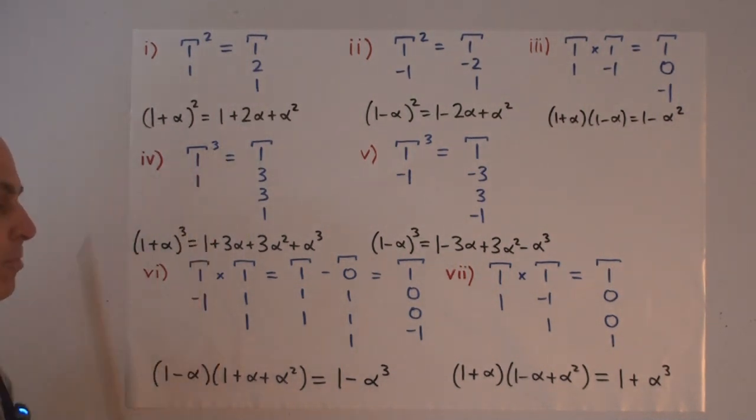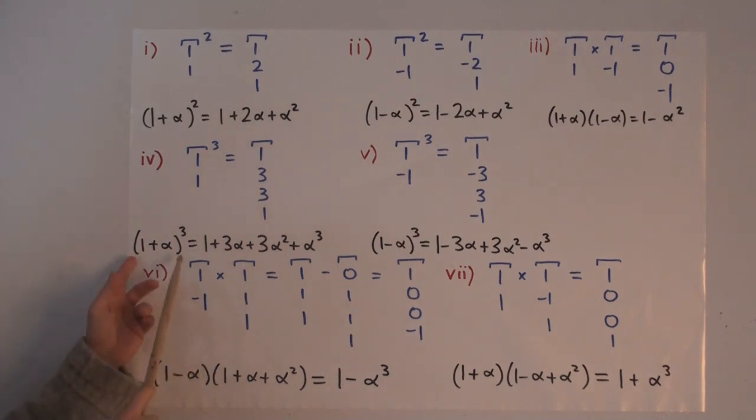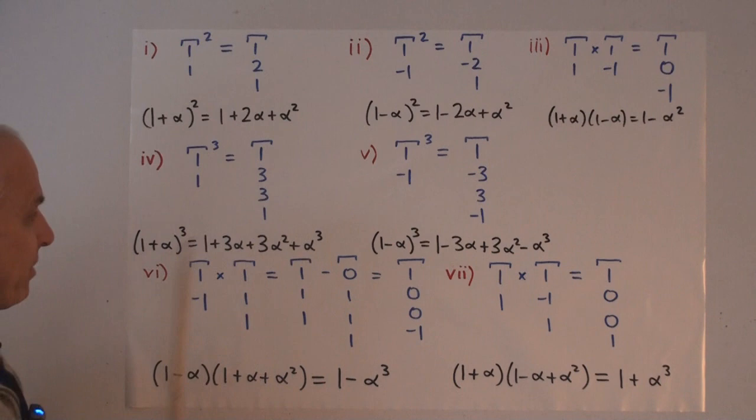Here we have 1, 1 cubed this time, giving us 1, 3, 3, 1. And that's just the binomial theorem, special case of it. (1 + α)³ = 1 + 3α + 3α² + α³.